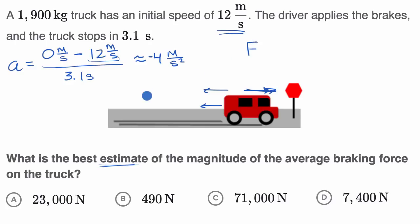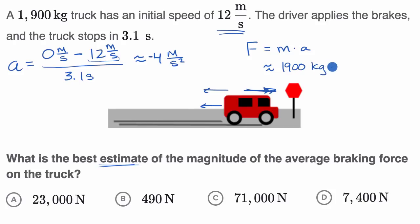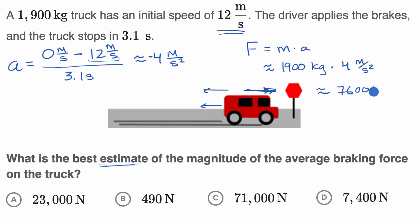Using Newton's second law, the magnitude of the force needs to be equal to the mass times the magnitude of the acceleration. This is approximately 1900 kilograms times 4 meters per second squared — I don't need the negative since I just want the magnitude. So this is going to be approximately 7,600 kilograms times meters per second squared, i.e., 7,600 newtons.